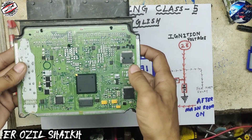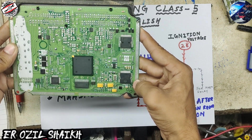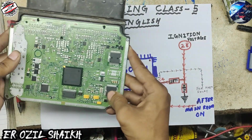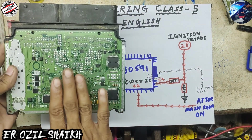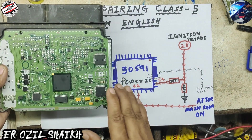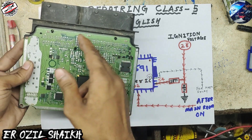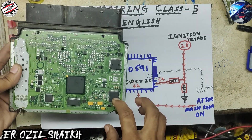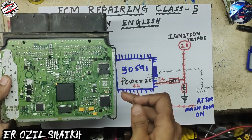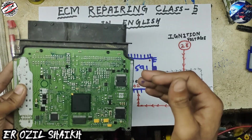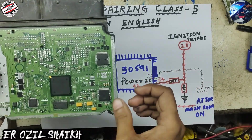This is the board which uses the power IC 305-30591. In this ECM, this IC is used for low voltage regulation and power distribution on the board. This IC also takes crank signal, makes CAN, K-line, and main relay output.